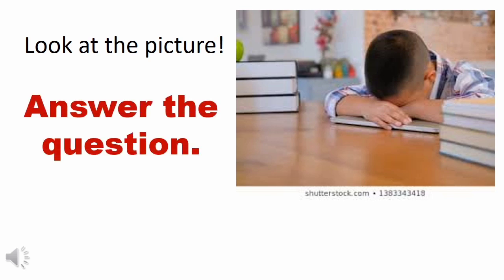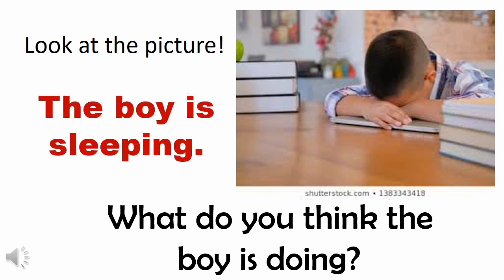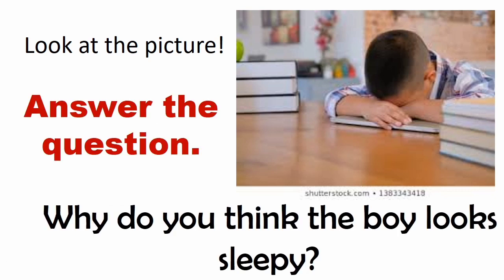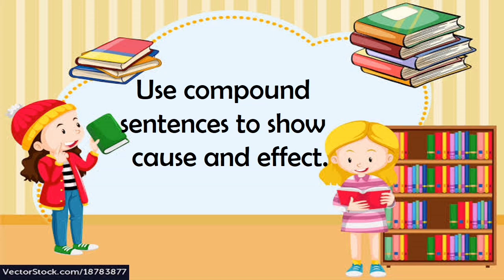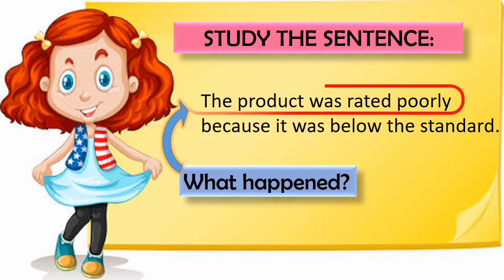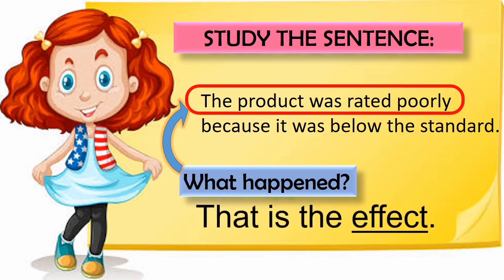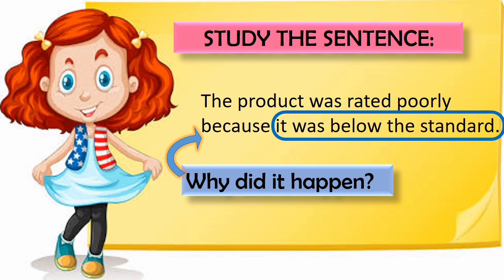Look at the picture. What do you think the boy is doing? The boy is sleeping. Why do you think the boy looks sleepy? He must be tired. Let us study the sentence. Let us read all together: The product was rated poorly because it was below the standard. What happened? The product was rated poorly — that is the effect. Why did it happen? It was below the standard — that is the cause.